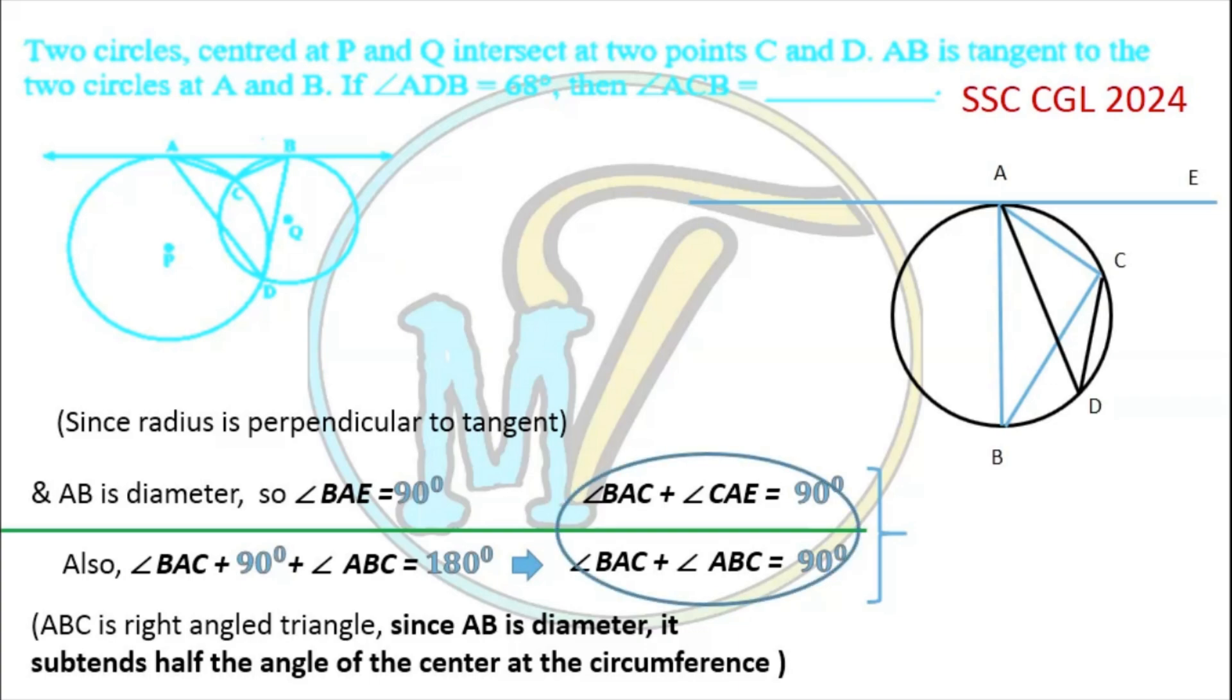Therefore comparing these two equations, we can write that angle CAE equals angle ABC. But since angles on the same side of the chord are equal, so angle CAE equals angle ADC.